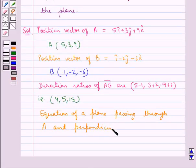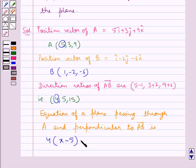and perpendicular to vector AB is 4 into x minus 5 plus 5 into y minus 3 plus 15 into z minus 9 is equal to 0